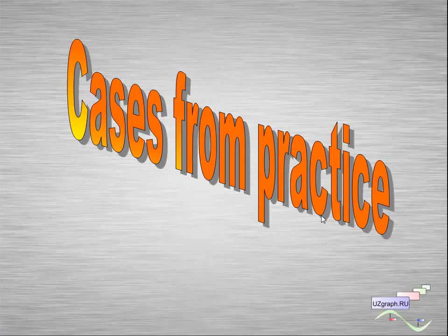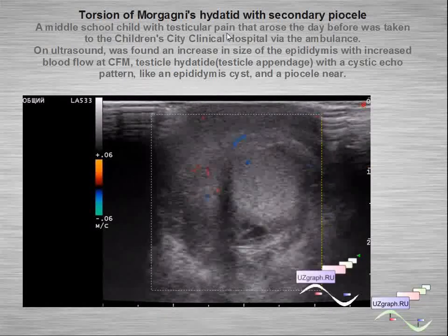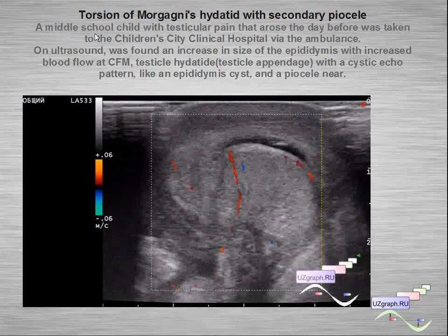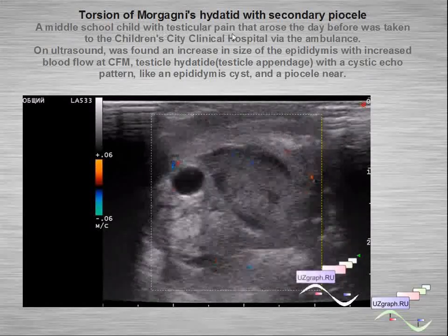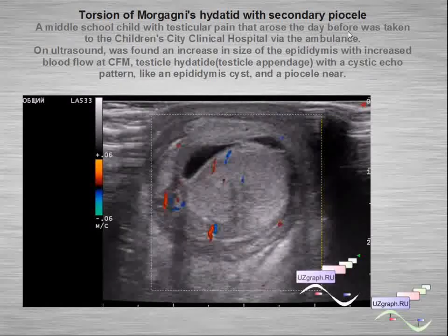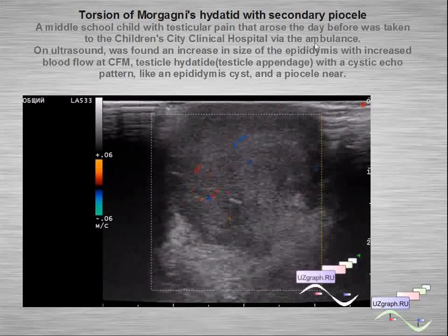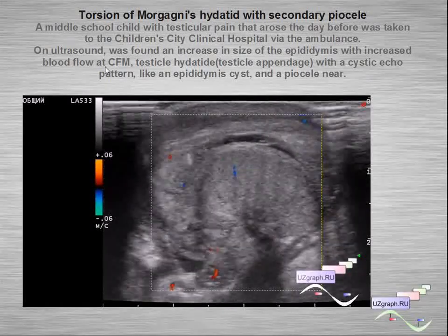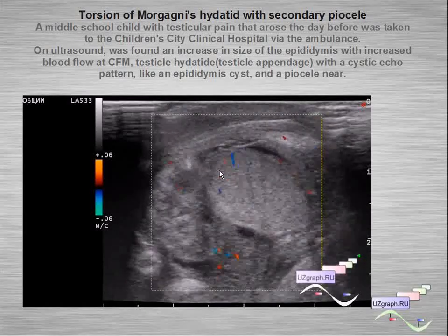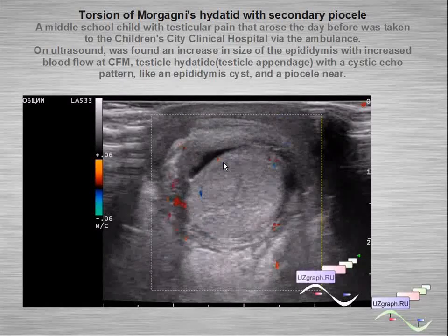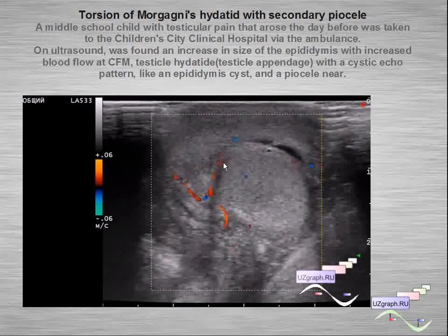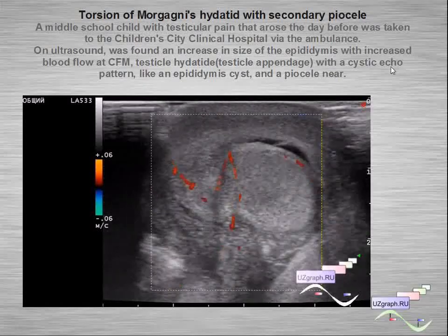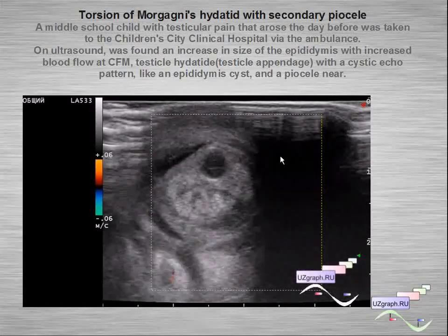A case from my practice: torsion of Morgani hydatid — testicular appendix — with secondary pyocele. A middle-school child with testicular pain that arose the day before was brought to the Children's City Hospital by ambulance. On ultrasound, we found an increase in size of the epididymis with increased blood flow at color flow mode, and a testicular appendage with cystic echo pattern. We can see it here, along with pyocele — fluid with septum.